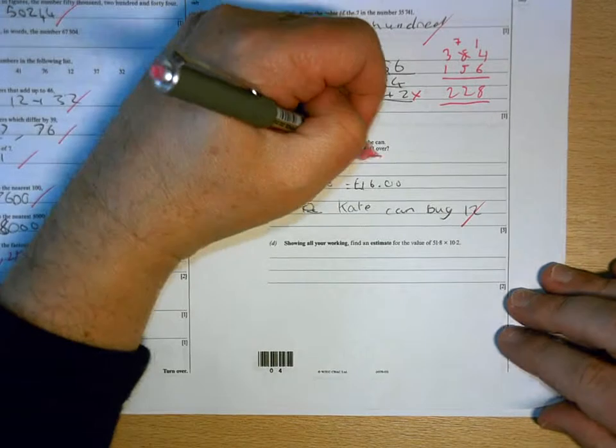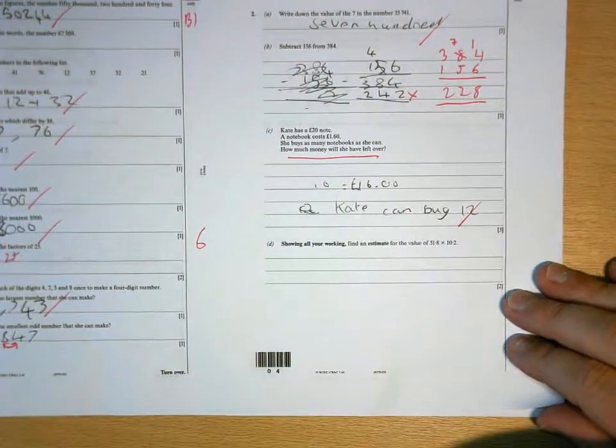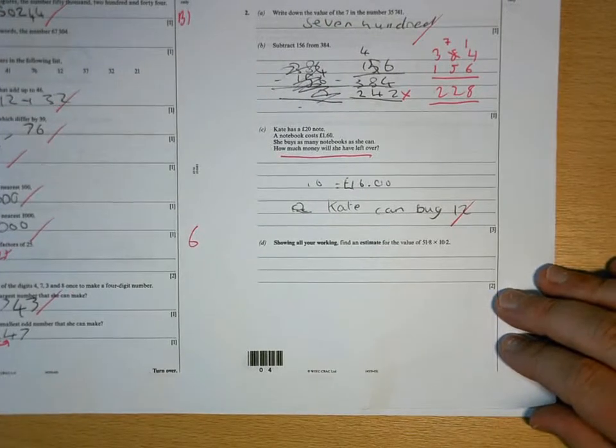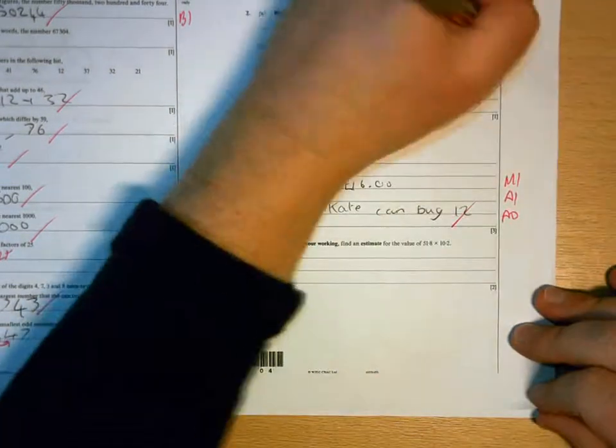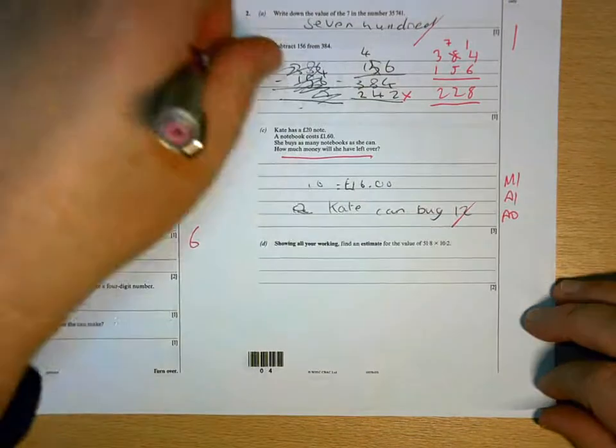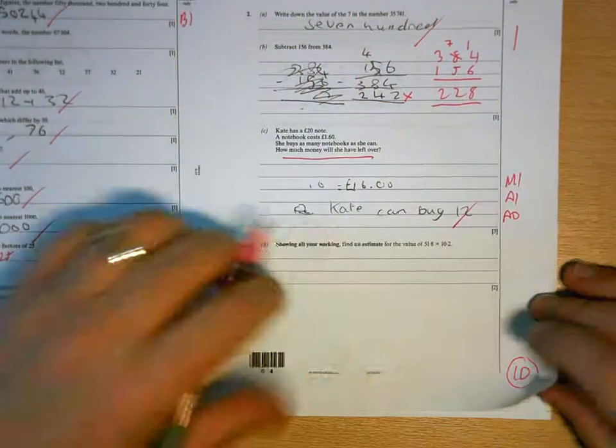Kate can buy 12, but you're not telling me how much she has left over, so you would only get 2 of the 3 marks there. So, 6, 7, 10 for the page.